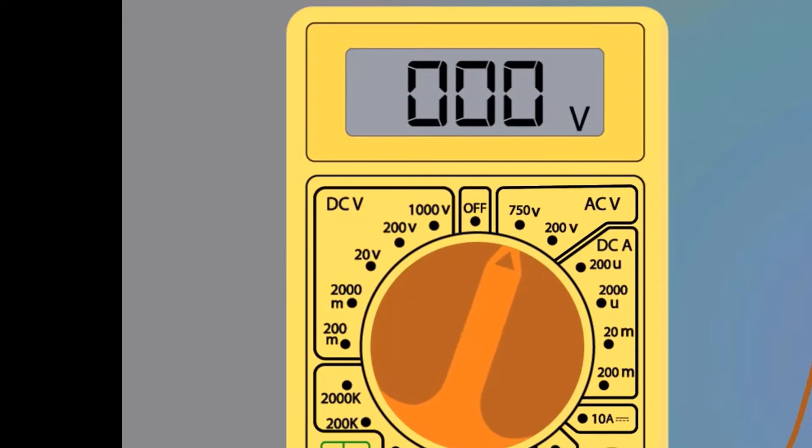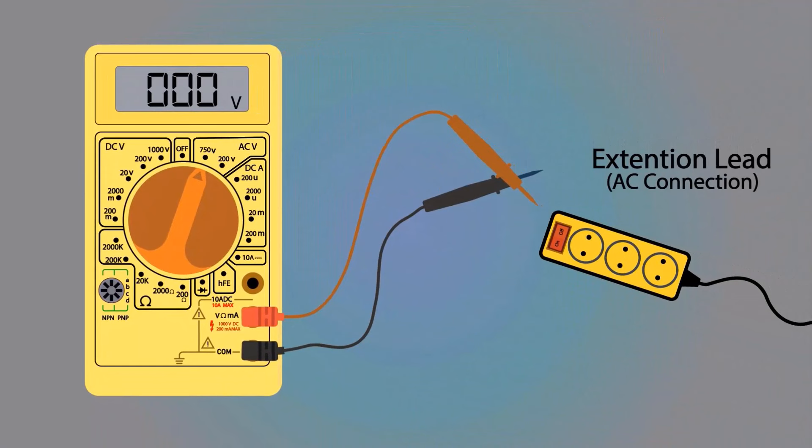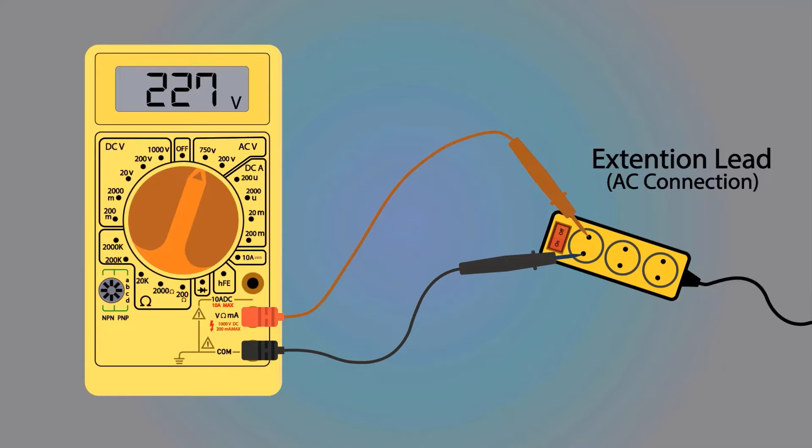Select 750 volts range. Take an AC connection to measure AC voltage. Put the probes into the extension lead connection. The multimeter is showing 227 volts. This is how we can measure AC voltage.